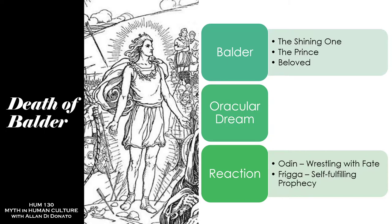Frigg is the wife of Odin — a goddess also connected to prophecy who knows the future. But in this story they emphasize her characteristics as a mother. She loves her son and doesn't want him to die. Like any good mother, she's going to try to protect her child. And this is where the self-fulfilling prophecy comes in — the prophecy brought about by your own actions, sometimes in an attempt to avoid it. Like Oedipus Rex, she actually brings about her son's death by trying to prevent it.